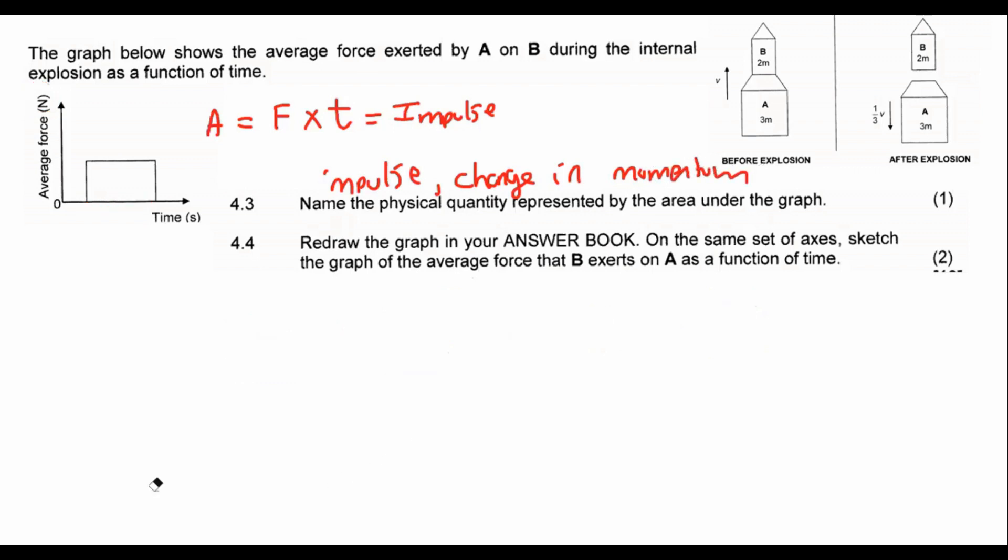The next question 4.4, redraw the graph on the same set of axes sketch. So they wanted us to just redraw what we have. Then it says on the same set of axes, sketch the graph that B exerts on A.